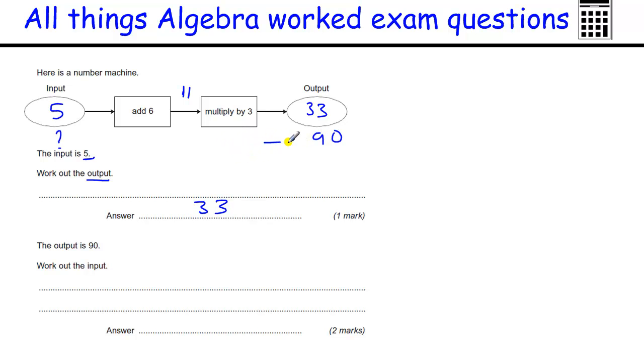Or we can work backwards, which is much quicker, by just undoing what's been done. This is multiplied by 3, so to undo that we divide by 3 to get 30. And then we need to undo the add 6, so we're going to take away 6, and 30 take away 6 is 24. So our input is 24. We could just check that by adding 6 to 24 to make 30, and times by 3 is 90. There's the answer.